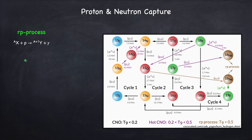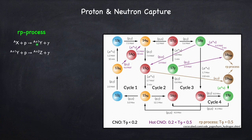That seed nucleus is going to capture a proton and convert into a new species with one more proton. Nuclear species are defined by the number of protons in their nucleus. So now this is a new species Y, and it's got a mass of A plus 1, since we've added a nucleon. This new species Y is then going to capture another proton and convert into another species Z with the mass of A plus 2. That species captures another proton, and the process keeps going, piling on protons one after another, making heavier and heavier nuclei.